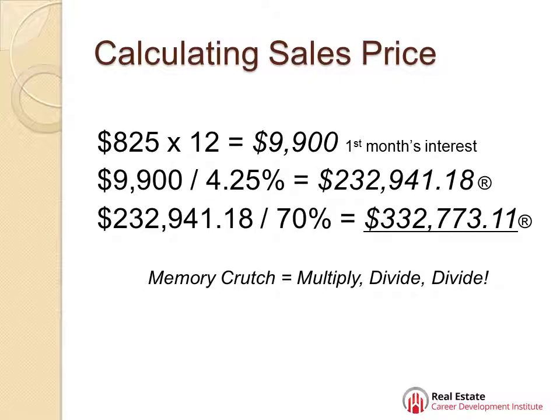You take the $825, which represents the interest, and multiply it times 12 because there are 12 months in a year. $9,900 is actually your first year's interest. Then you take $9,900 and divide it by your interest rate, which is 4.25%. That gives you $232,941.18.